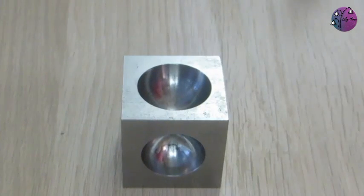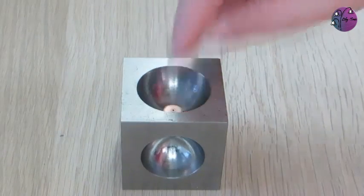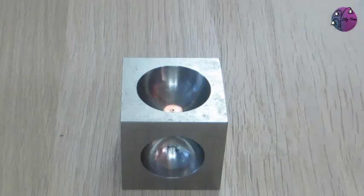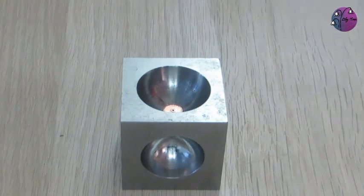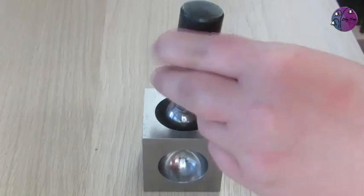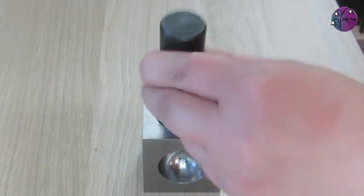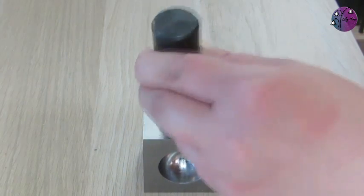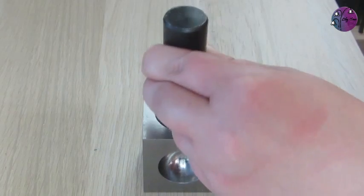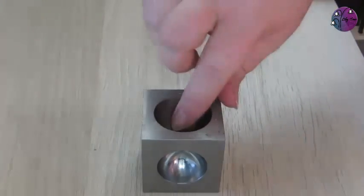So we're now ready to shape the bead caps by doming the discs. I've got my dapping block here and I'm starting with one of the largest discs and putting that in one of the larger holes and I'll use my largest dapping punch and hammer several times. I find in the larger holes the disc does move around quite a lot so you need to check that it's evenly domed.